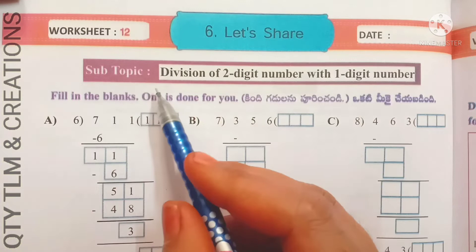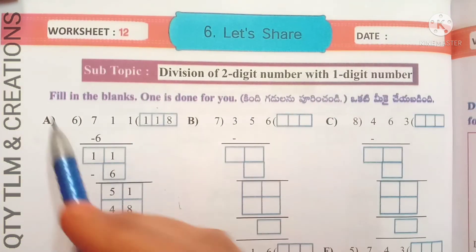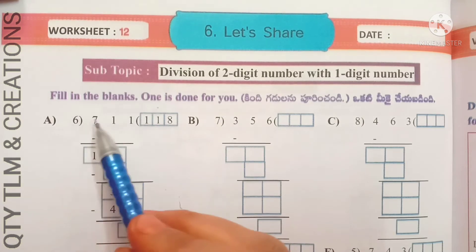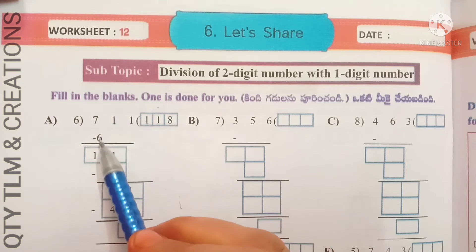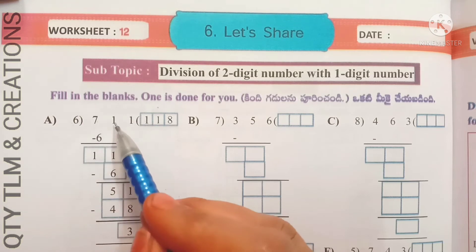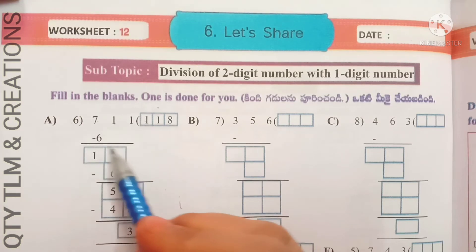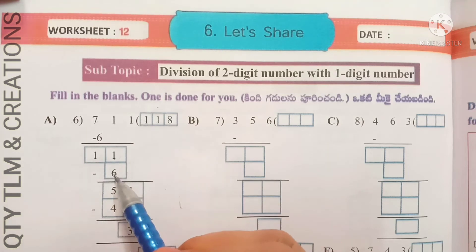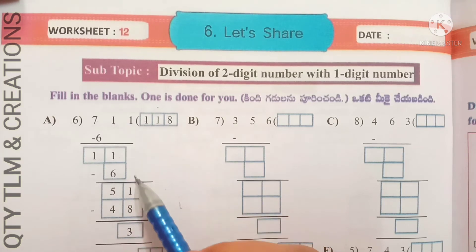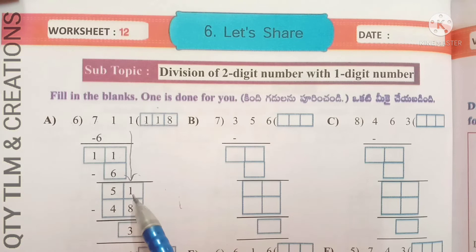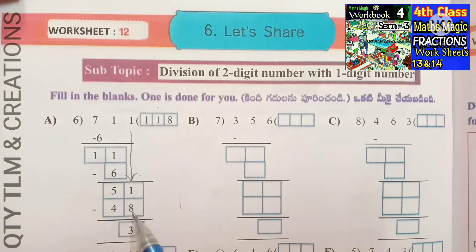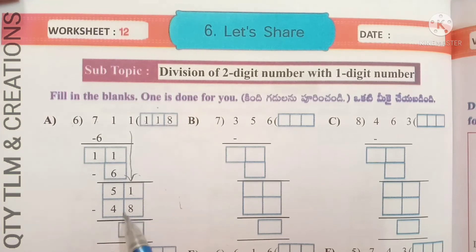Next, worksheet number 12. Subtopic: division of a 2-digit number with a 1-digit number. Fill in the blanks. One is done for you. A: 711 divided by 6. 6 divides 7 for 1 time — 6 ones are 6. Subtract 6 from 7: we get 1. Bring down 1 from tens; it becomes 11. 6 divides 11 for 1 time; subtract 6 from 11: we get 5. Bring down 1 from ones; it becomes 51. 6 divides 51 for 8 times — 6 eights are 48. Subtract 48 from 51: we get 3.